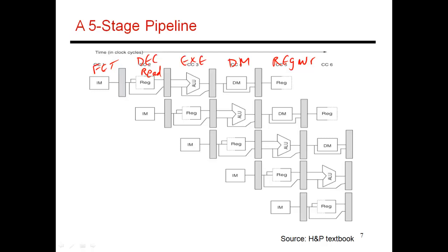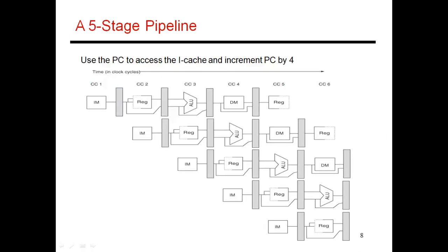Now let's take each one of these stages in more detail. The first one is the instruction memory stage. What is not shown here is that there is a latch that serves as an input to the instruction memory stage, and this latch stores the program counter. It tells you where exactly in your program you are currently executing, and this program counter serves as an input to the instruction memory stage.